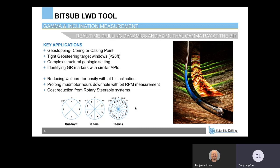If we have a tight geosteering window — say less than 10 feet up and down — I have an example later of a seven-and-a-half-foot up and down window in the Permian Basin. This is a very good application just because we are reducing the bit-to-sensor distance. For complex structural geology settings with lots of faults, folds, or major dip changes along the lateral, we can identify these in real time and make changes to our geosteering program. This is also a very good application for identifying gamma ray markers with similar API counts, such as shales above and below with very similar API values, where having the measurement less than two feet from the bit minimizes the amount of time out of zone.